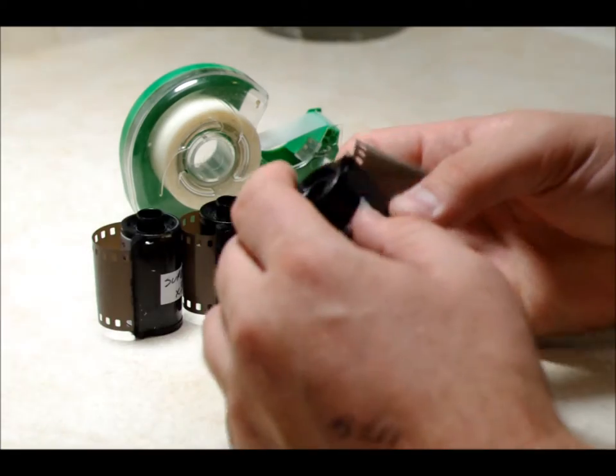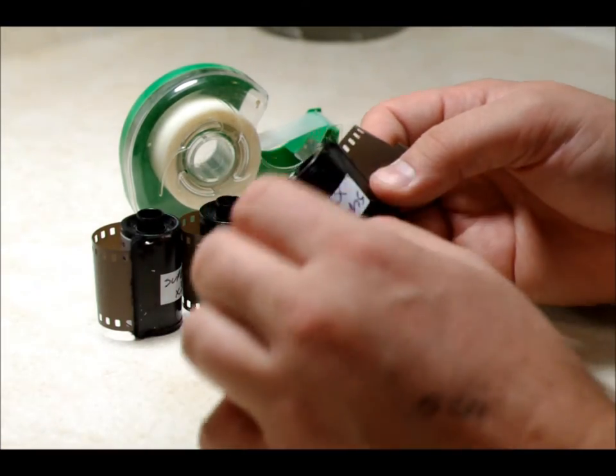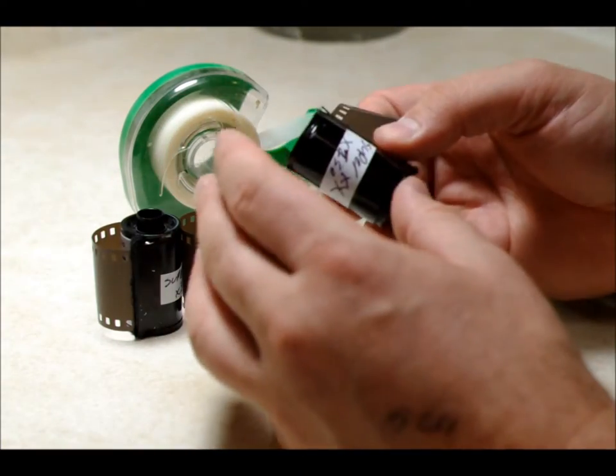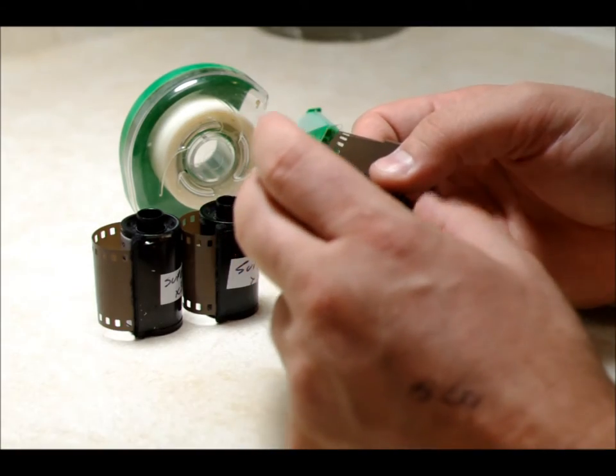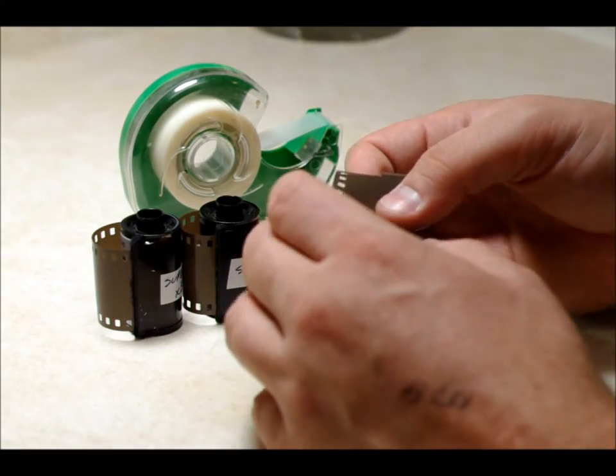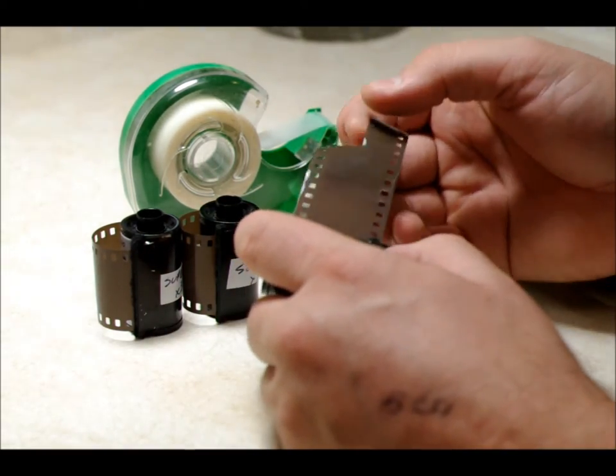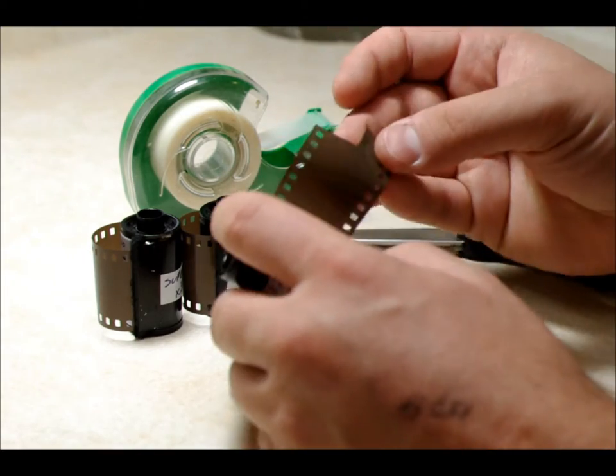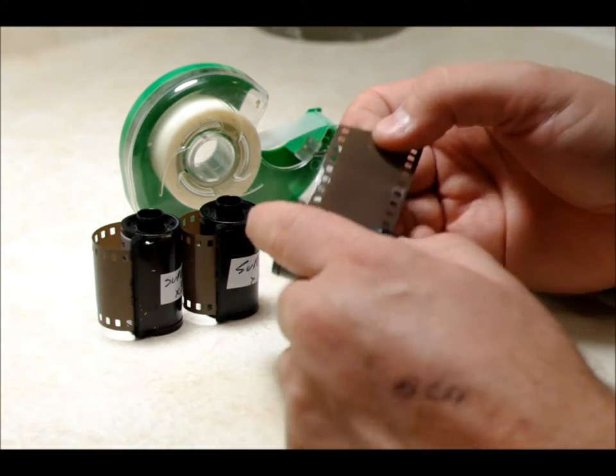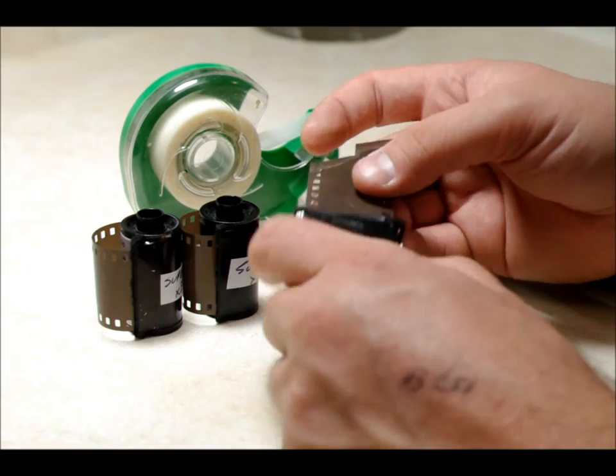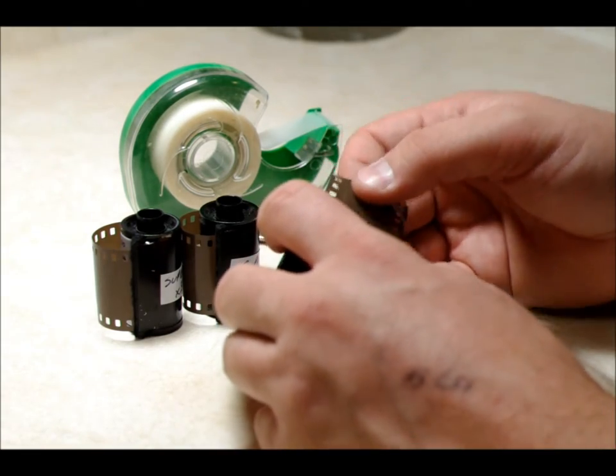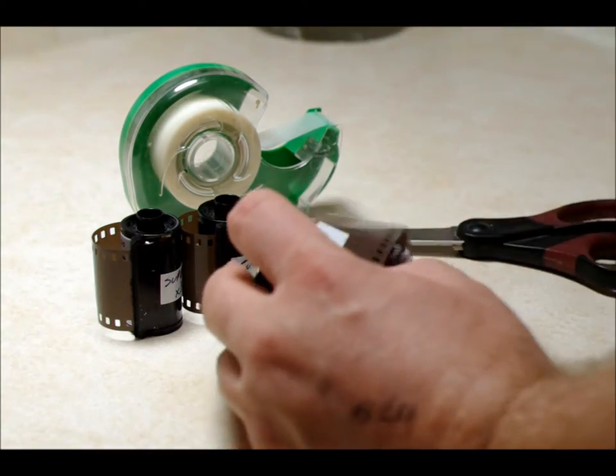So at this point, you're going to want to go into a dark room or grab a large dark bag or tent. For this, I actually find this easier to do in the bathroom with a towel under the door. Because what we're going to do is anytime you take the film out of the cassette, you've got to be completely out of the light or you're going to ruin the film. So for this, what we're going to do is take all the film out of the cassette.